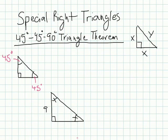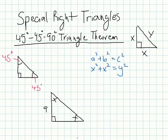Let's look at this example right here and perform the Pythagorean theorem. The Pythagorean theorem says a squared plus b squared equals c squared. In this case, we have x squared plus x squared equals y squared. If these lengths are the same, that means these angles are the same. And if these angles are the same, we know that this is 90 degrees. We have 90 degrees plus two of the same angle, and we know the sum of the interior angles of a triangle is 180.